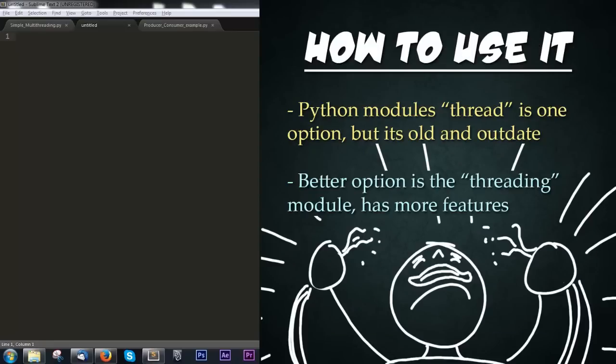So how do we use multithreading? There are two different modules: there's thread and threading. Thread is an older one developed for an earlier version of Python, and threading is newer with many more features. We'll be going through two examples using threading — one is simple and one is more practical.